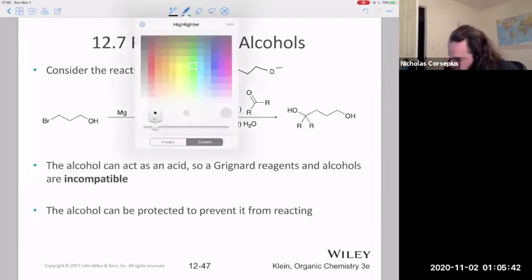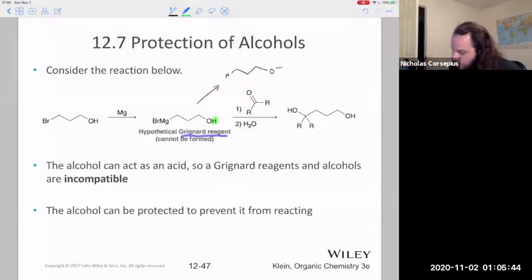And this proton that was on that alcohol group will just be moved over there, right? So these molecules, what would happen if you try to create a Grignard reagent, is the alcohol groups and neighboring molecules would react with that Grignard group and you wouldn't get anywhere. This is why we would have to add a protecting group.